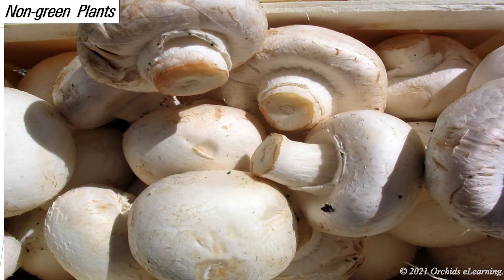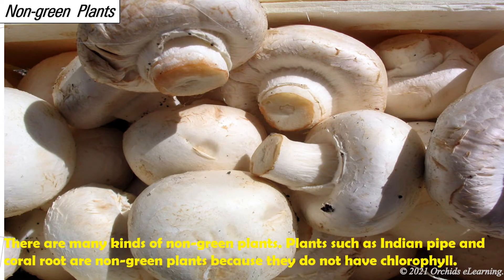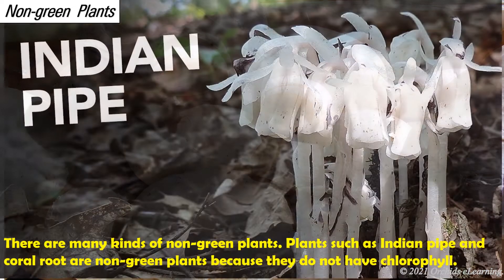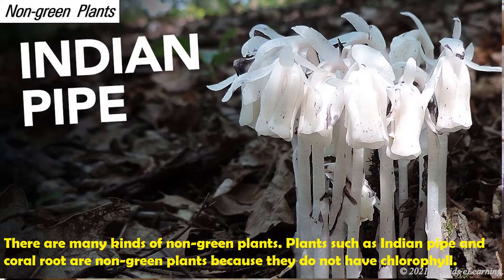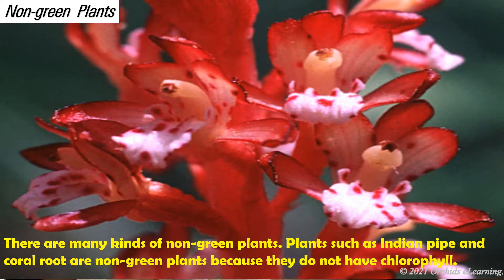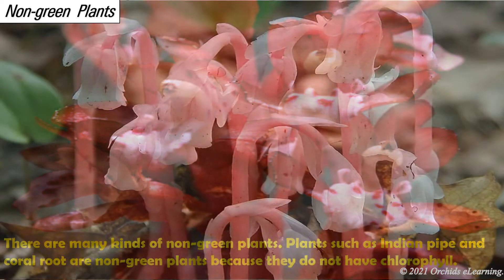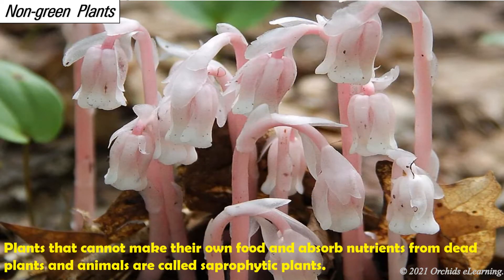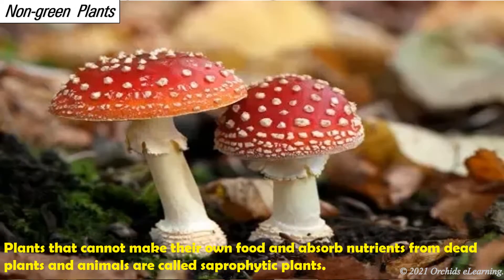Non-green plants: there are many kinds of non-green plants. Plants such as Indian pipe and coral root are non-green plants because they do not have chlorophyll. Plants that cannot make their own food and absorb nutrients from dead plants and animals are called saprophytic plants.